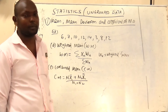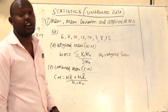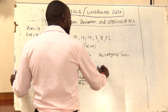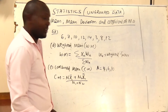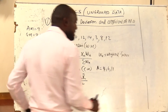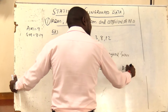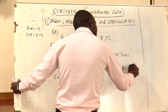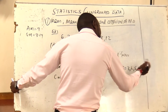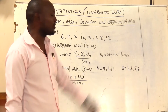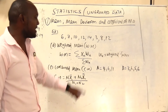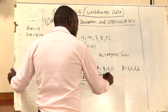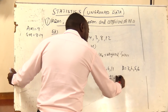When it comes to combined mean, it's very simple. You may be given two sets of data. For example, group A has data: 4, 6, 11 — three values. Group B has data: 3, 6, 5, 6 — four values. You can calculate the mean of group A, which is 4 plus 6 plus 11 over 3, giving 7. And the mean of group B is 3 plus 6 plus 5 plus 6 over 4, which is 20/4, giving 5.